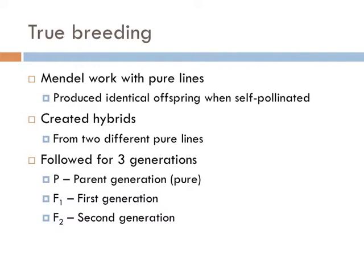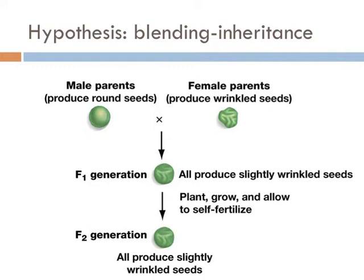So let's look at the blending inheritance hypothesis. Mendel thought that if this hypothesis were to be supported, that his experiment would produce these results. If he mated a pure line of round seed plants and a pure line of wrinkled seed plants, he would get an F1 generation of all slightly wrinkled plants, and an F2 generation with all slightly wrinkled plants. In other words, if the traits were blended through generations, he expected that the first generation would yield plants that would produce all slightly wrinkled plants. And if he mated those hybrids, he would expect that all of those plants of the F2 generation would also yield slightly wrinkled plants. But that isn't what he found.